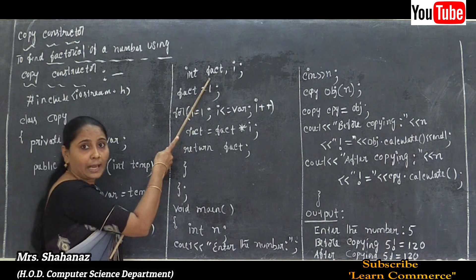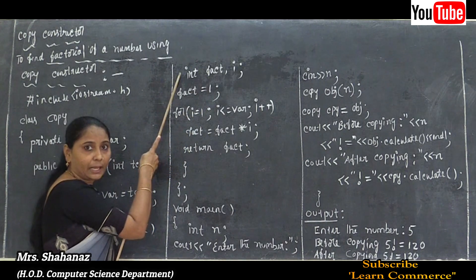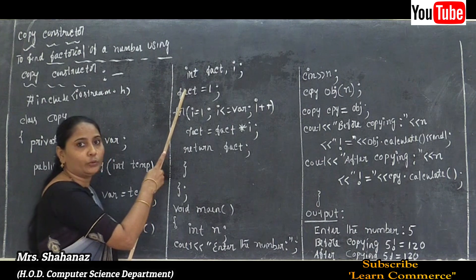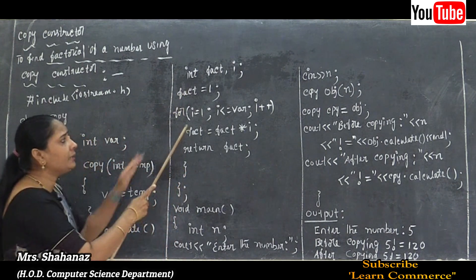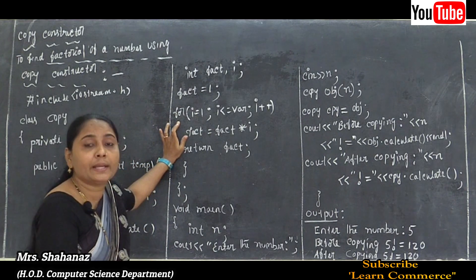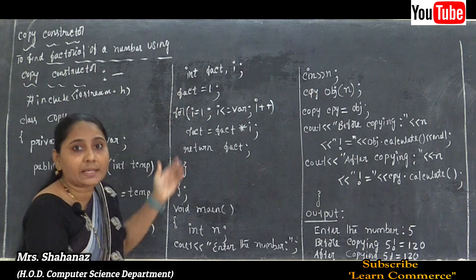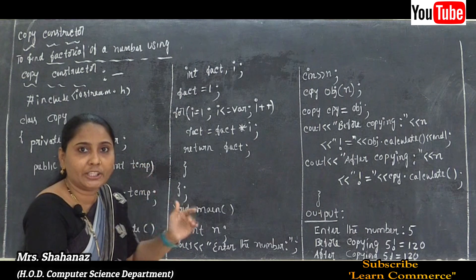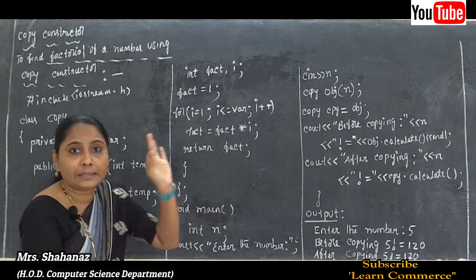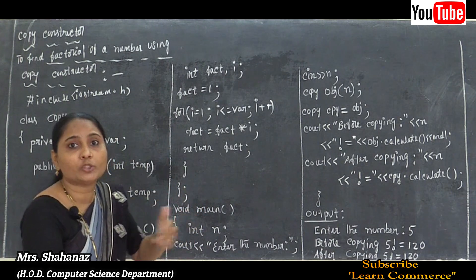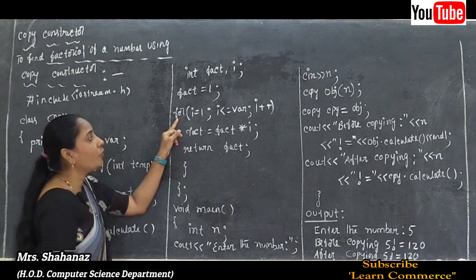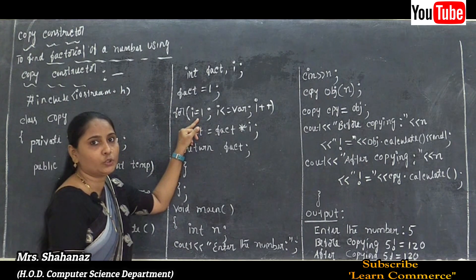In the first line we declare variables 'fact' and 'i' using data type int. In the second line, we initialize fact = 1. In the third line, we use a looping construct. A loop accesses values repeatedly until the condition is satisfied. It continues making calculations until the condition is no longer true.